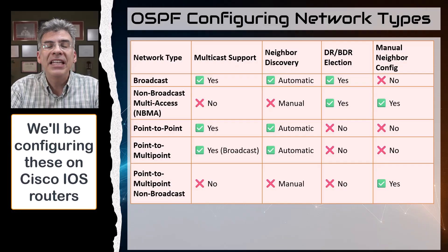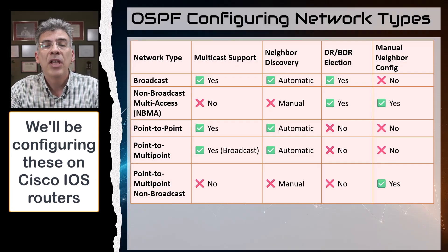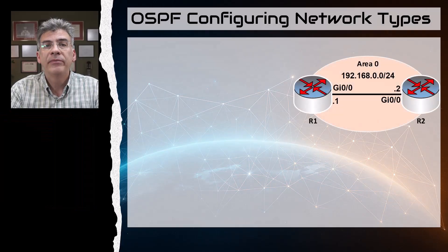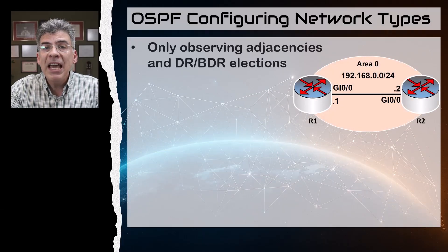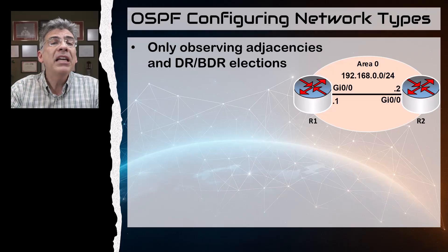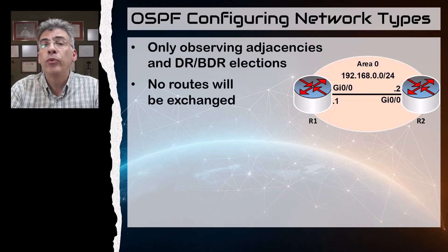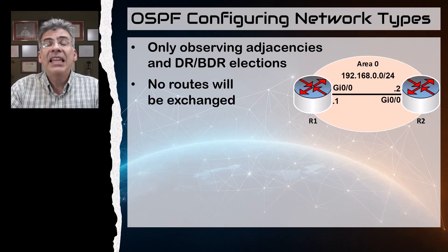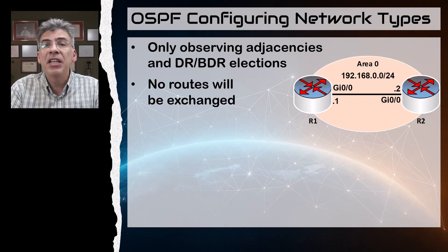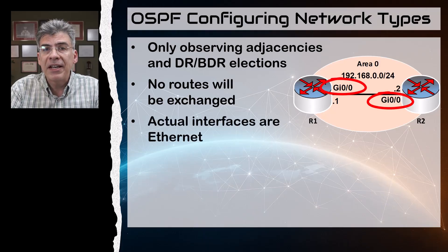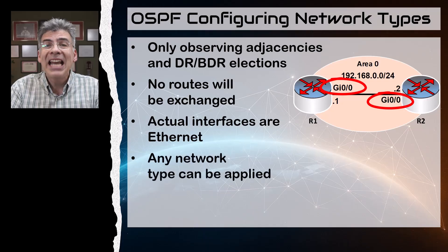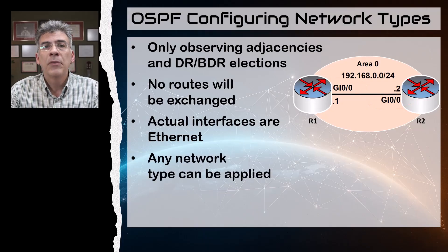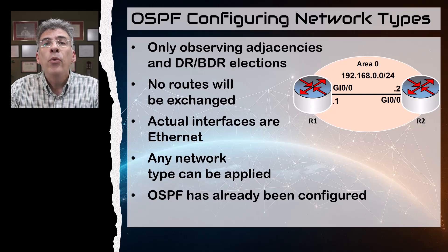Now let's take a closer look at each one of these from a configuration standpoint. We'll be using this topology here. We will only be dealing with OSPF mechanisms such as neighbor adjacencies and DR/BDR elections — we won't be configuring any exchange of actual routing information. The purpose is to see how these network types make the interaction between OSPF routers behave differently. The interfaces we'll be using are Ethernet interfaces, but we can configure them with any network type we want.